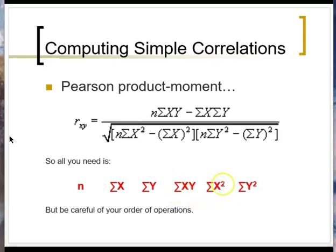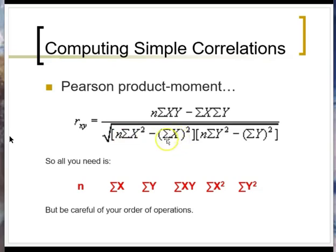We also need to take each y value, square it, and sum those up. The order of operations can get really tricky. For example, one term asks you to take each x value for a given observation, square it, then move to the next observation and square that x value, and so on, then sum them all up. Whereas another term asks you to first sum up all your x values and then square the total. Be very careful with the order of operations.